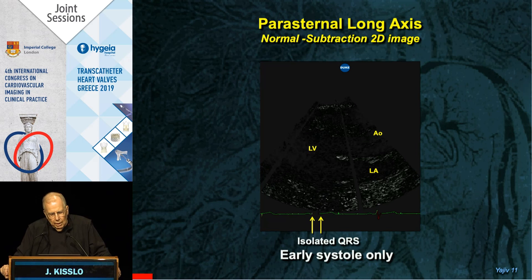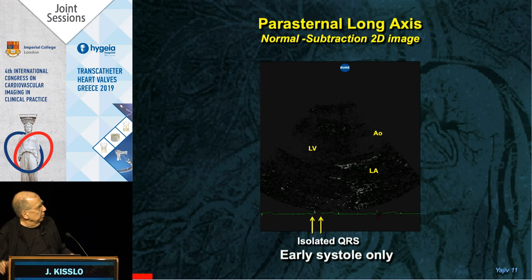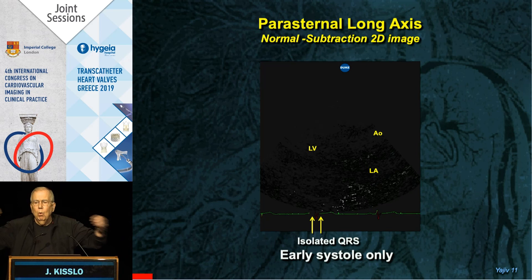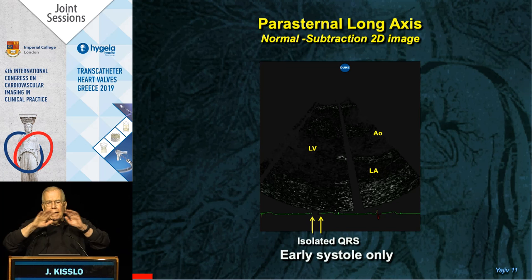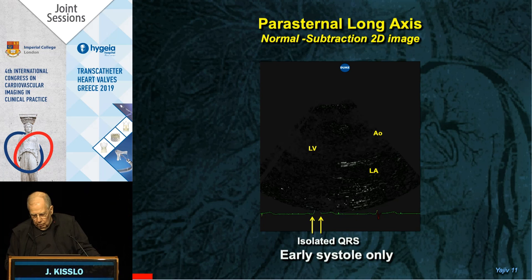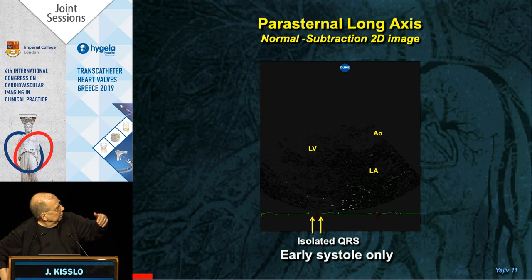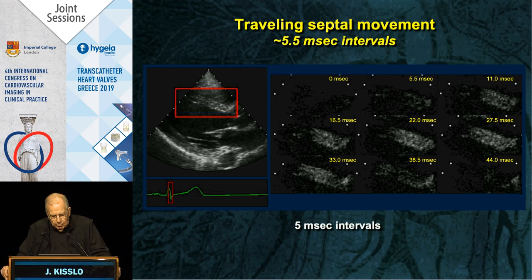Here's what we call a subtraction image — where we've subtracted one image from the other. When things light up white, that means something has changed; if it's still black, nothing has moved. Watch the septum here — this is a parasternal long axis — watch the septum light up. You can see things light up going down the septum, and if we track those over time we'd be able to map them.